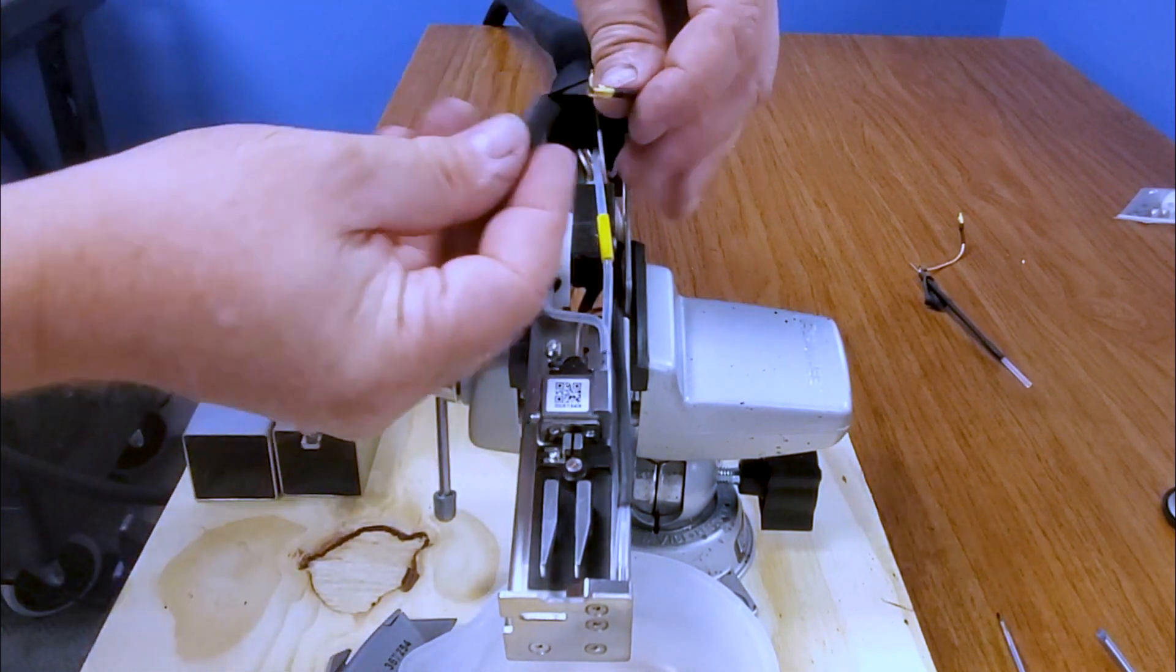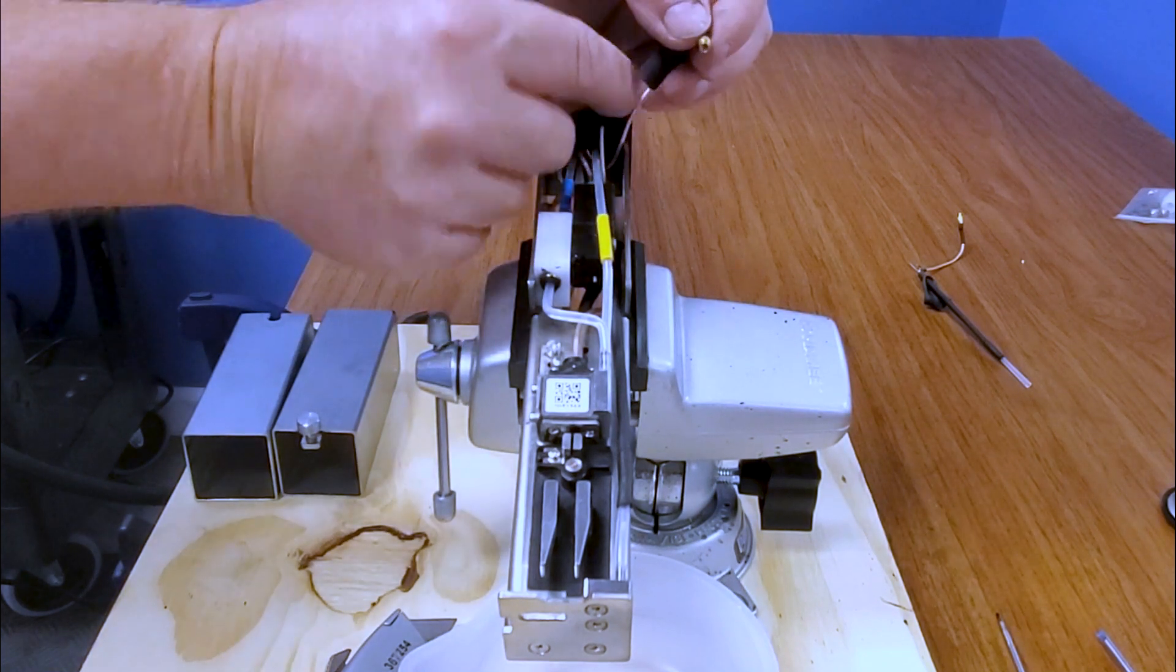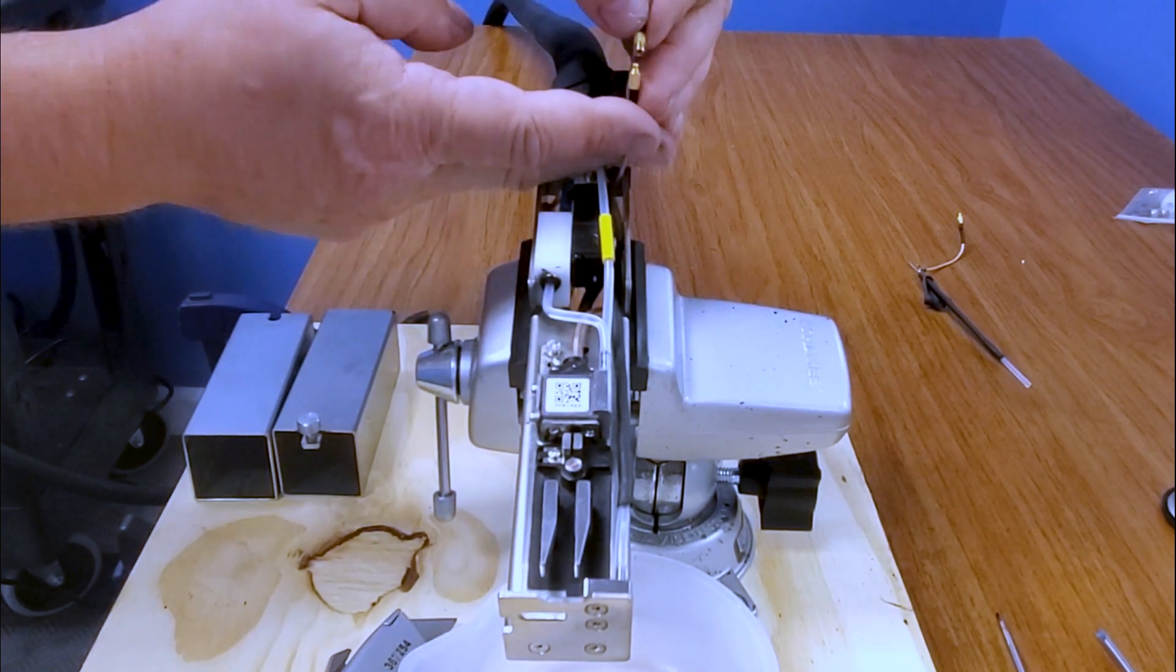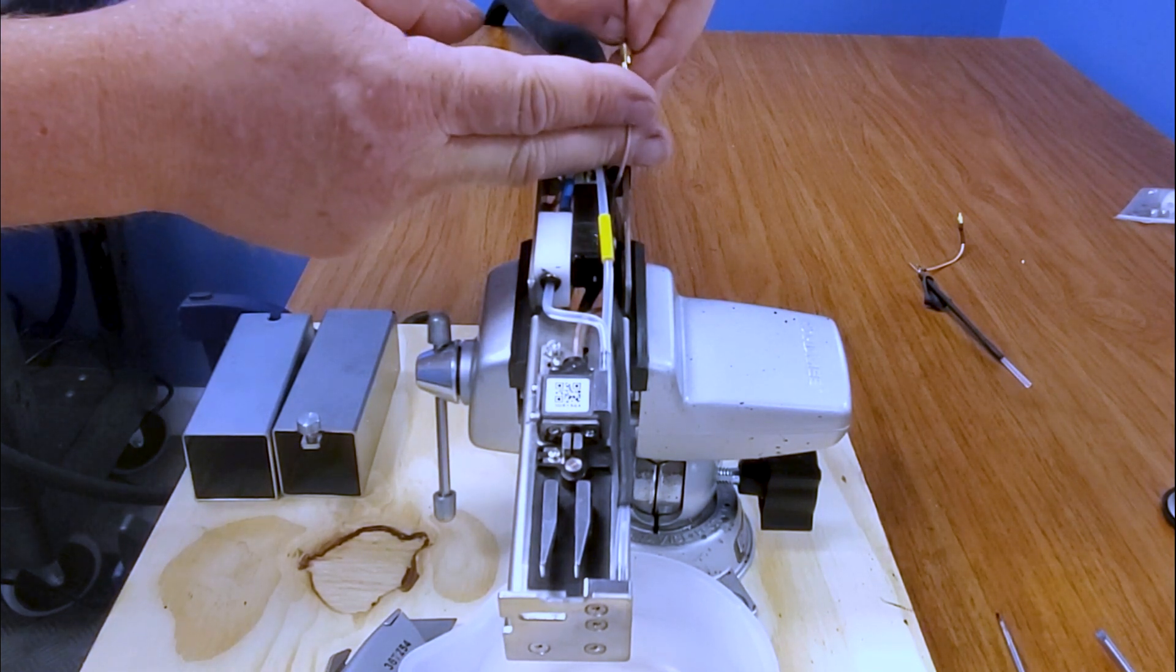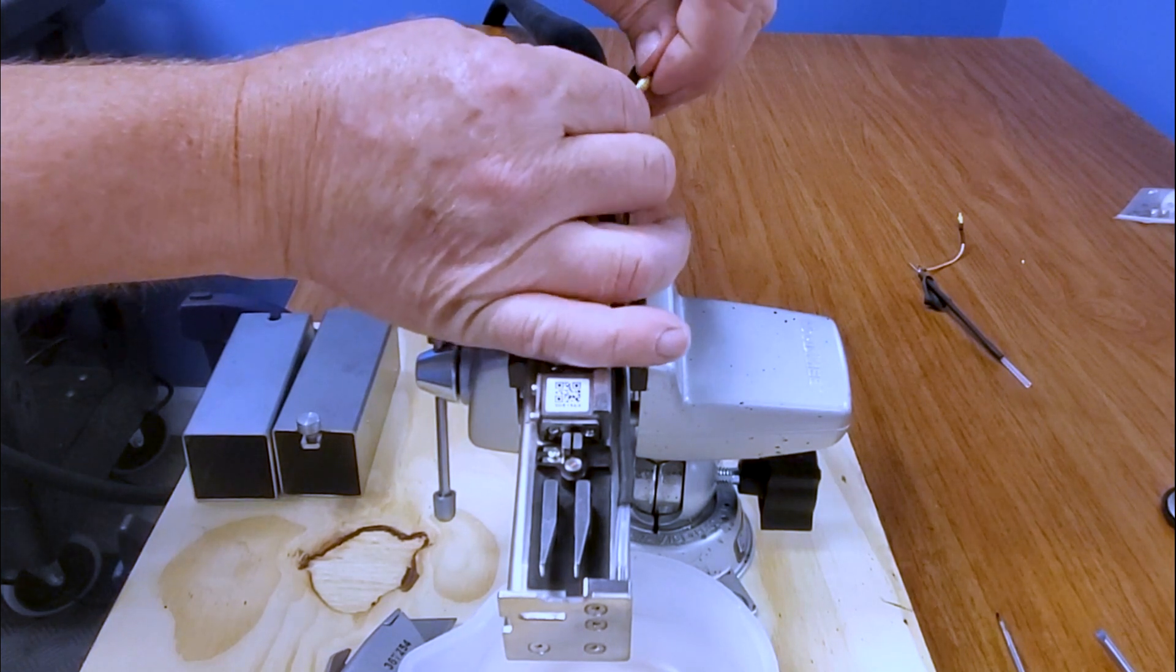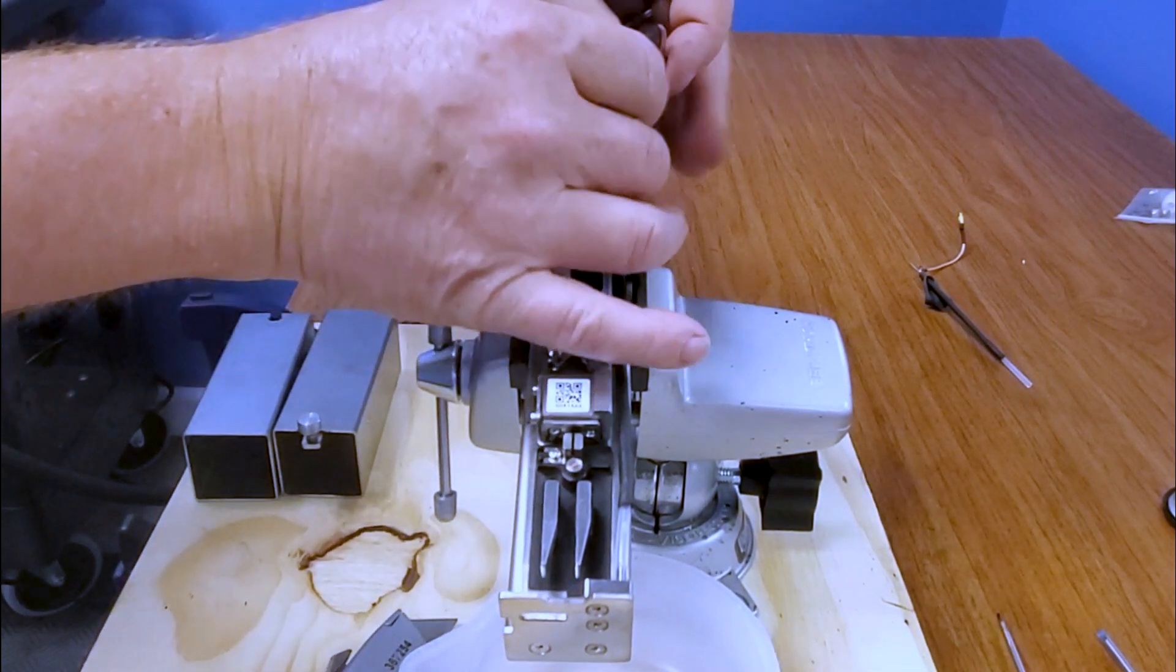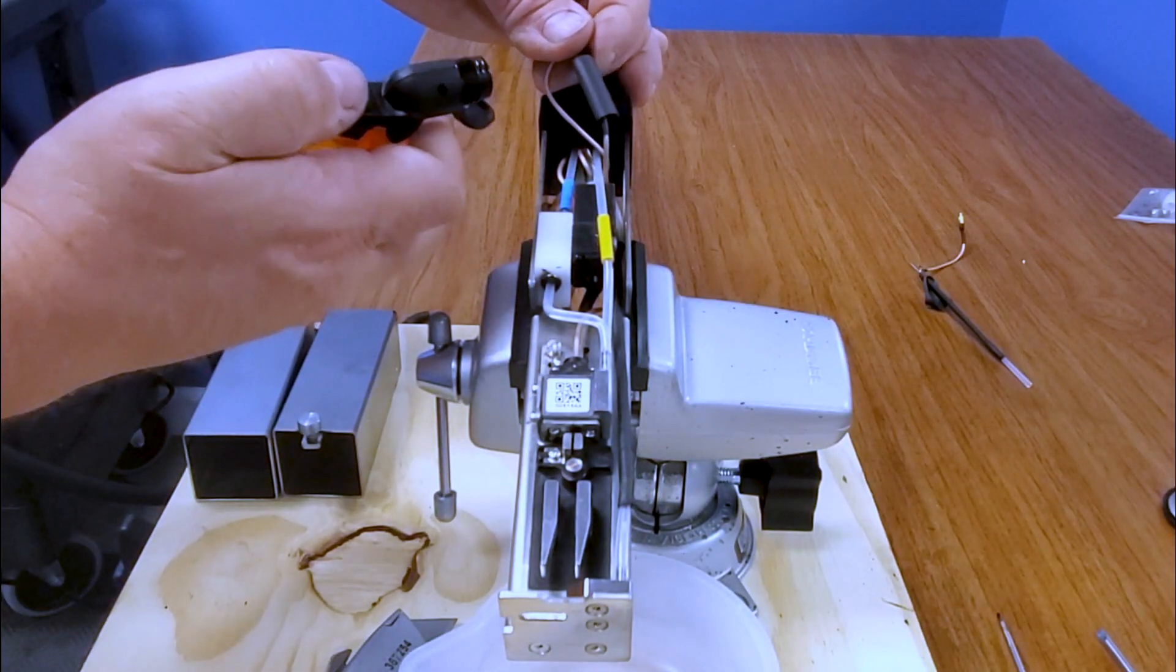We'll go ahead and grab the last piece of heat shrink and slide it over our connector. And then we will push our connector together until we hear it click. So I didn't hear it click there, so I did it again and now it's clicked in place. Now that it's in place, we'll go ahead and take our last piece of heat shrink.